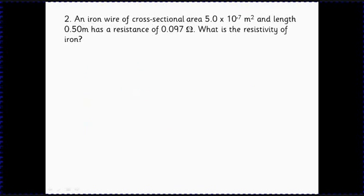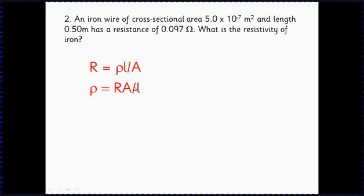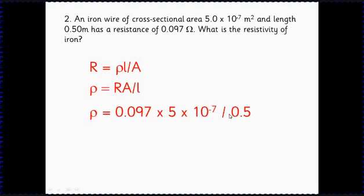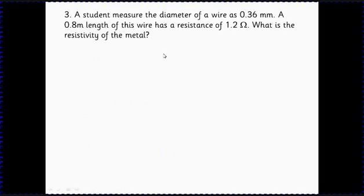Here's a second example where we work out resistivity — the equation on the data sheet gives resistivity directly. The first thing you need to do is rearrange to get resistivity equals R times A over l. Then put in the numbers — the resistance, the area, the length — carefully in your calculator, and you'll get a resistivity of 9.7 times 10 to the minus 8 ohm metres.